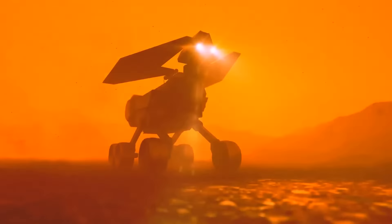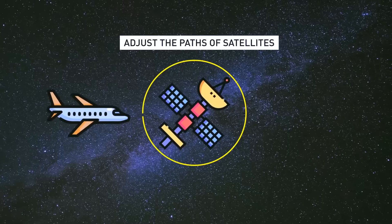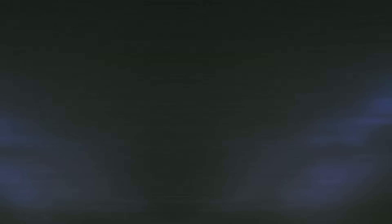We can't completely protect ourselves if a solar storm hits us directly. But we can still do some things, like ground planes, adjust the paths of satellites in space, and try to make sure vulnerable infrastructure stays safe. To do all this, we need better solar weather forecasts to help us get ready for the worst.